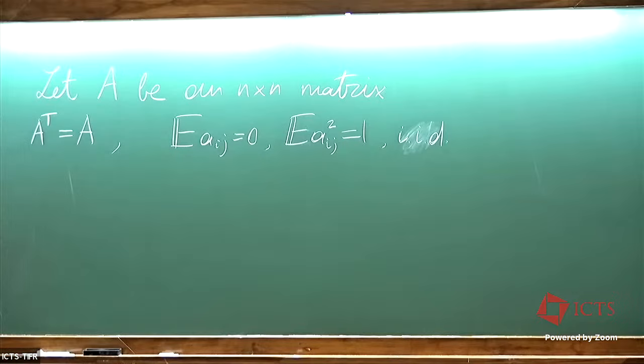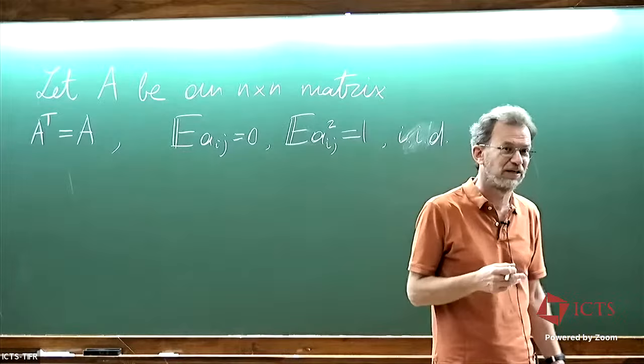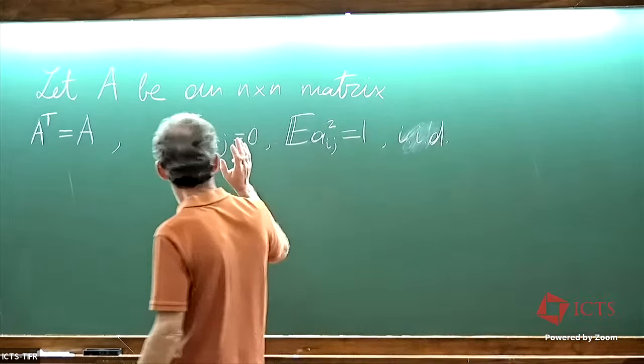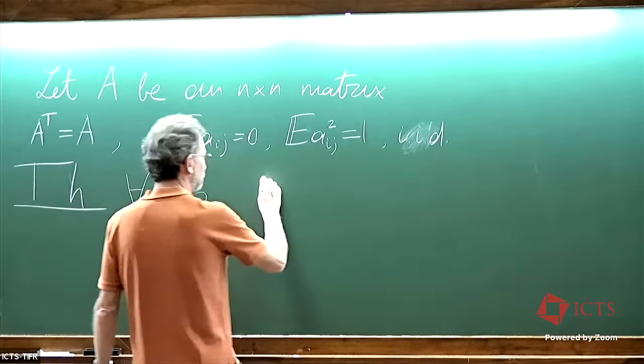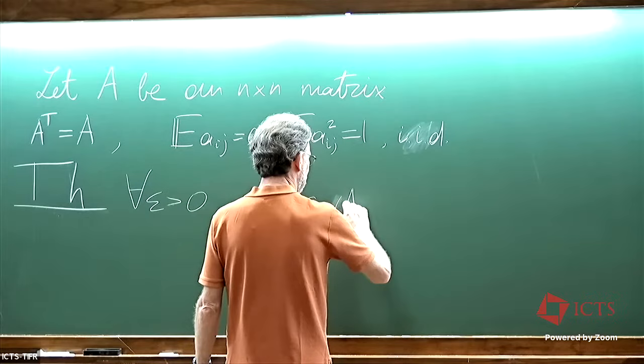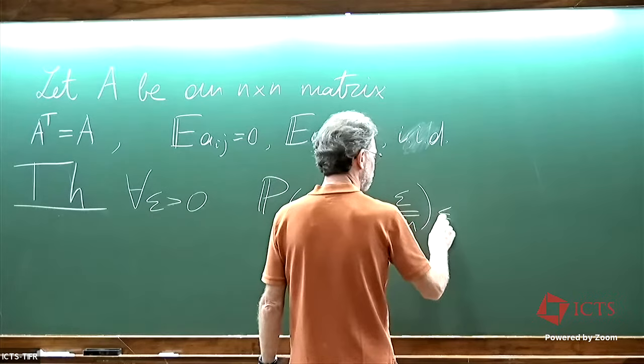The entries have light tails — formally they are sub-Gaussian, but if you are not familiar with this term, you can assume that they are bounded. The general theorem is that for any epsilon positive, the probability that the smallest singular value of A is bounded by epsilon over square root of n is less or equal than C.